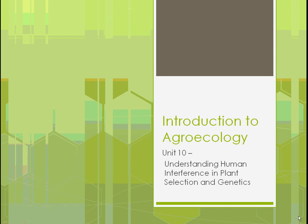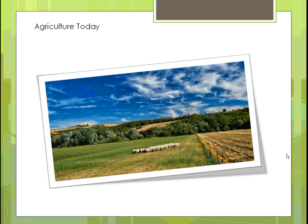Welcome back to Introduction to Agroecology. This is Unit 10, Understanding Human Interference in Plant Selection and Genetics. Basically what we'll be talking about in this unit is what we as a human population have done that we thought was good to feed the world population, and what we're finding out isn't very sustainable for the long-term future.